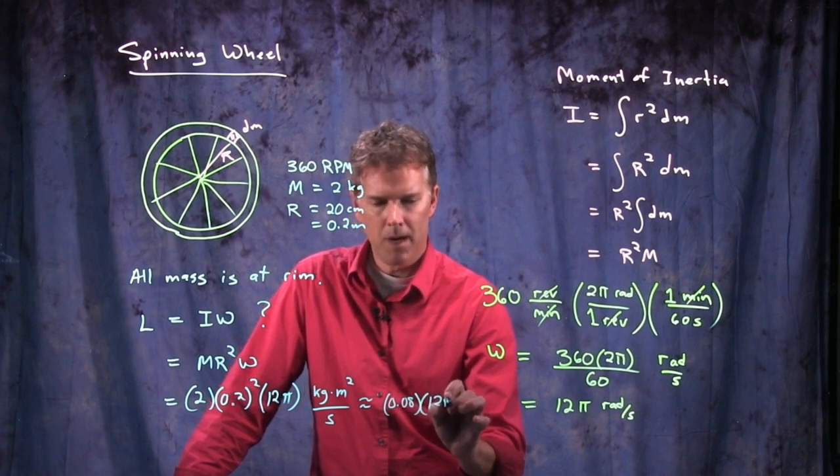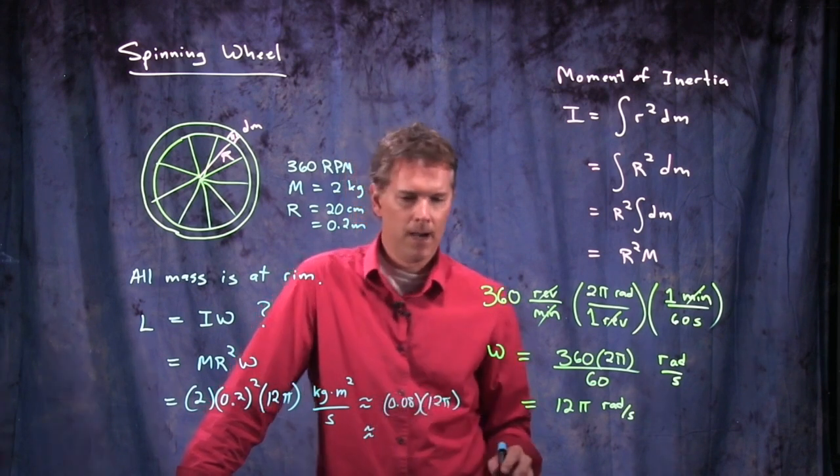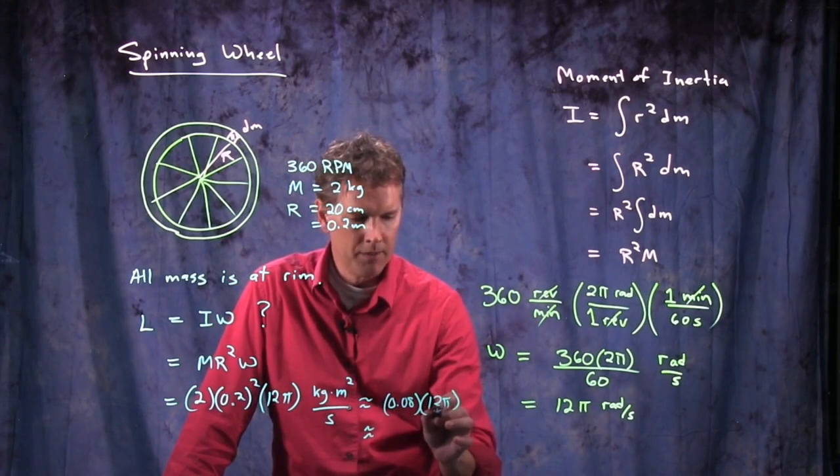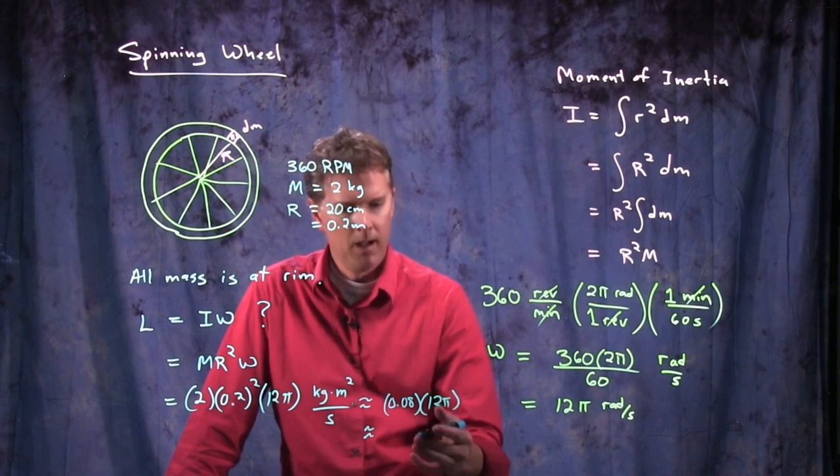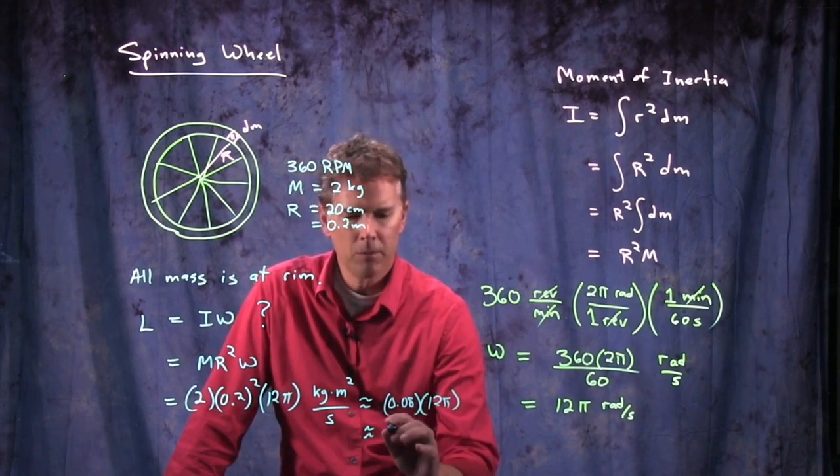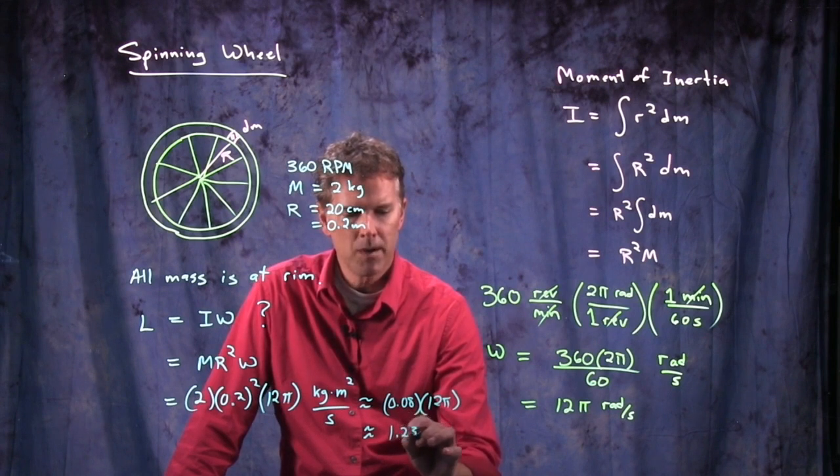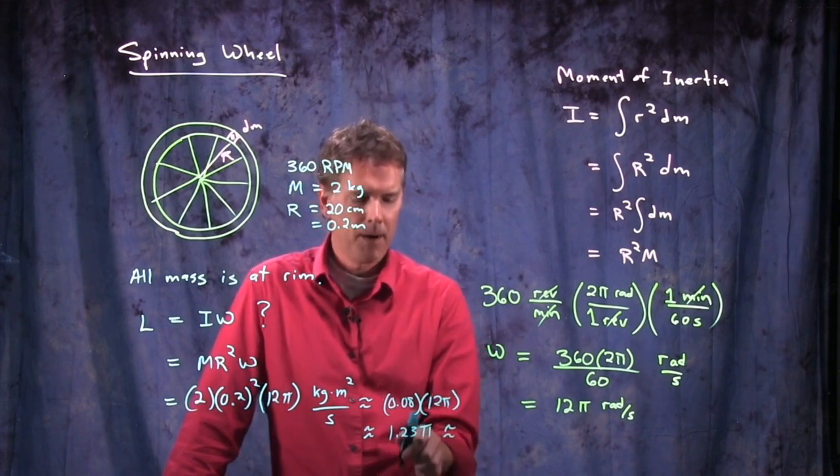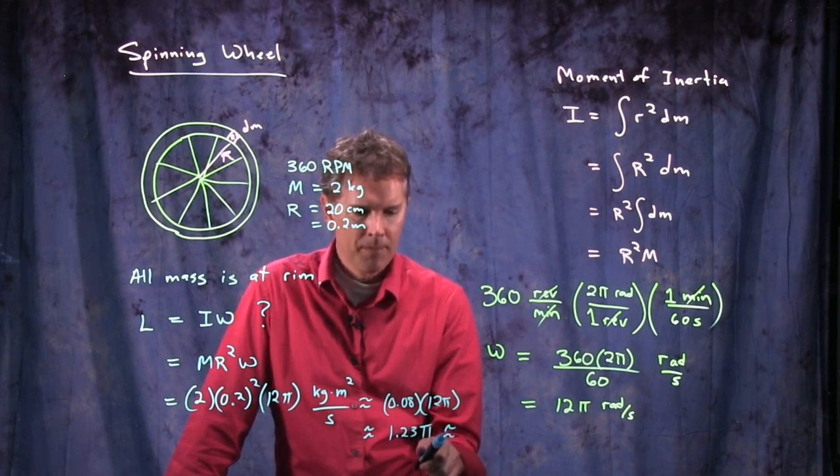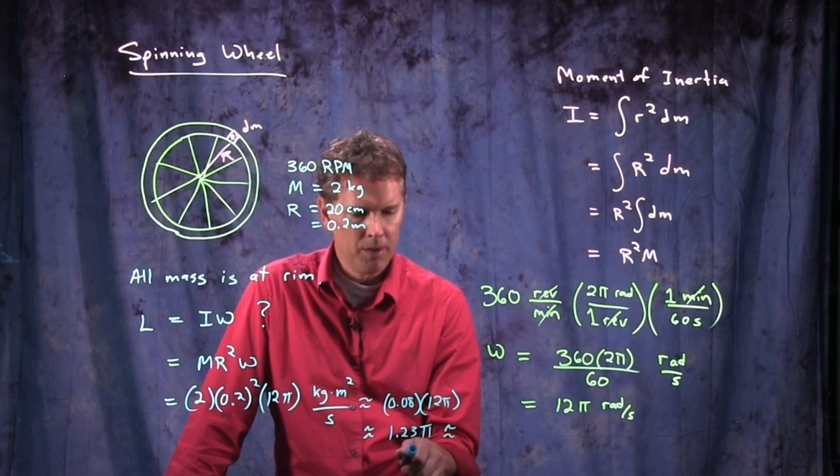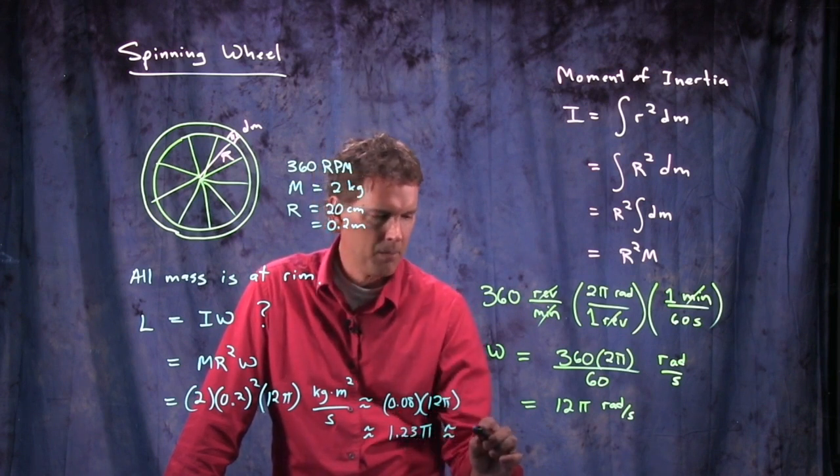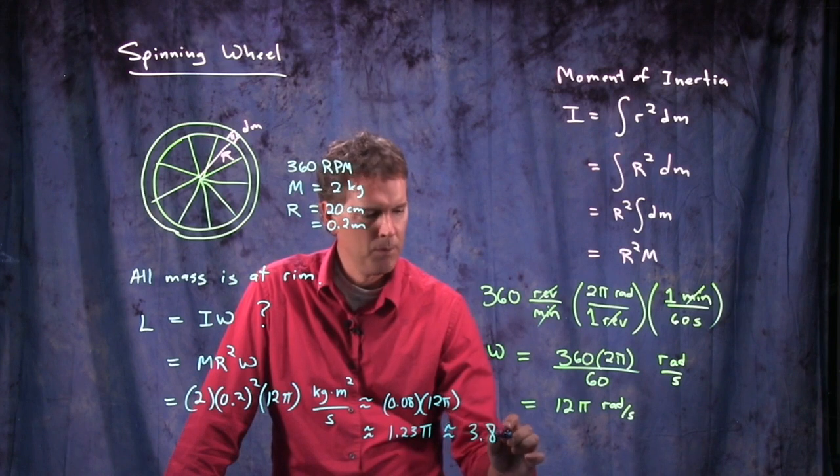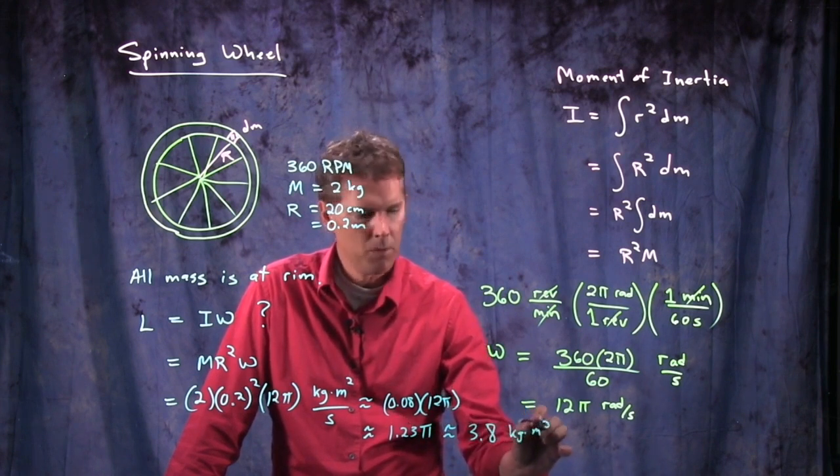And then I'm going to multiply that by 12 pi. 0.08 is really close to 0.1. And so if I do 0.1 on this, I'm going to get 1.2 pi. And it's going to be a little bit more than that. So we'll say how about 1.23. 1.23 pi. And 1.23 pi, the pi is about 3. So multiply this by 3. I get 3.69. And then we want to go up a little bit more. So I'm going to approximate it as 3.8.